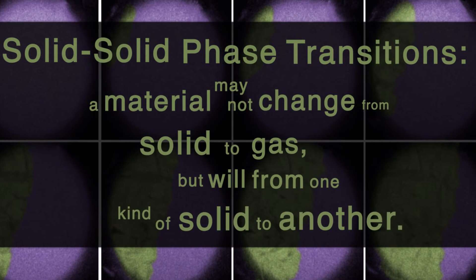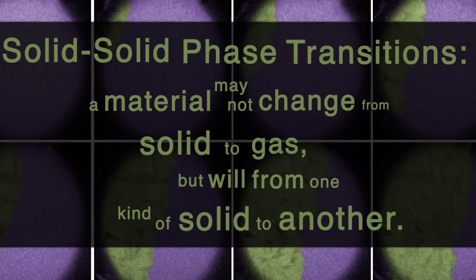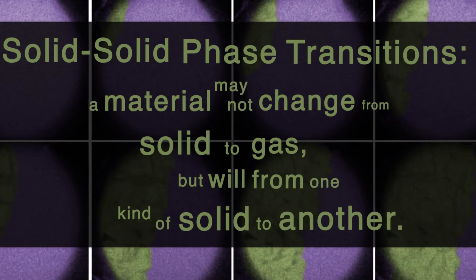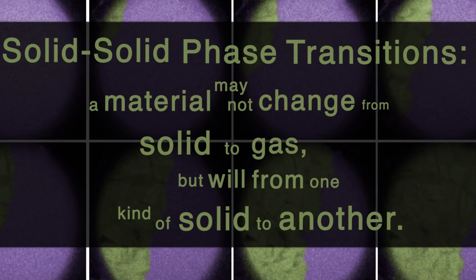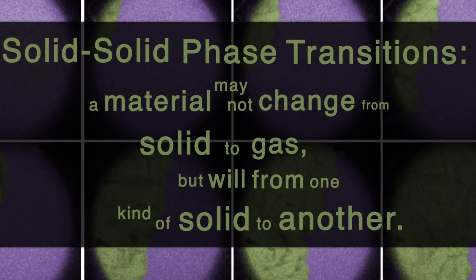In solid-solid phase transitions, a material may not necessarily change from a solid to a gas, but it will change from one kind of solid to another kind of solid. These two solids have vastly different nanostructures and thus behave differently.